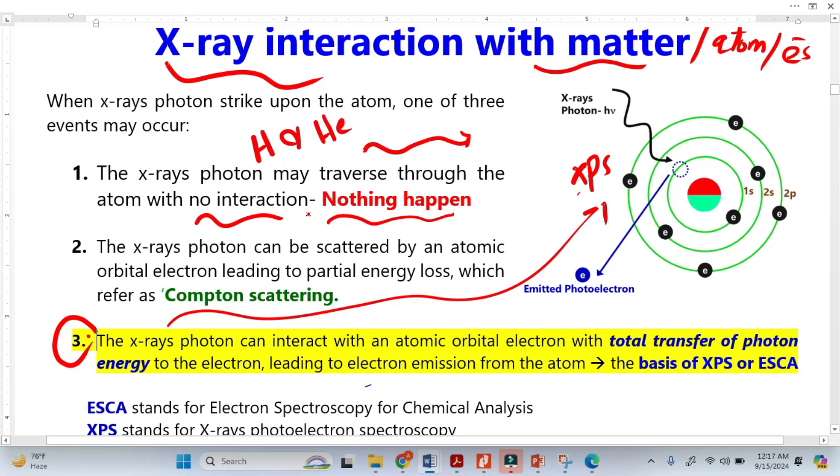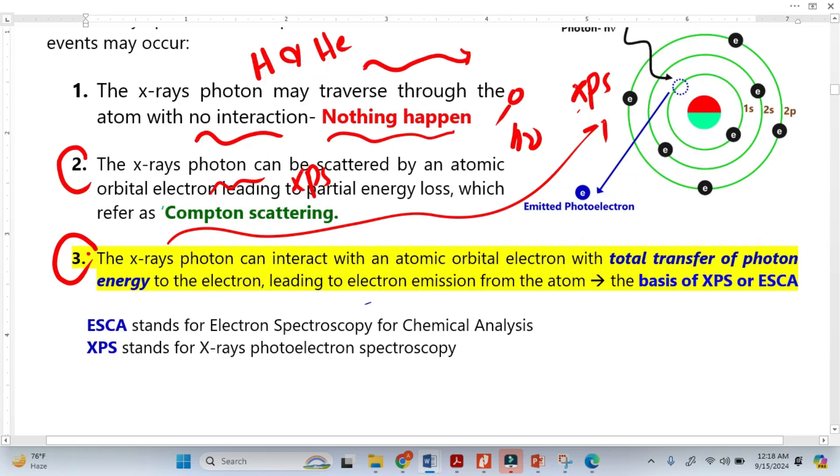Let's see the second one, which is also important. When an X-ray photon interacts with electrons, the electron scatters in one direction and the photon scatters in another direction. The photon loses some energy, and this is called Compton scattering.